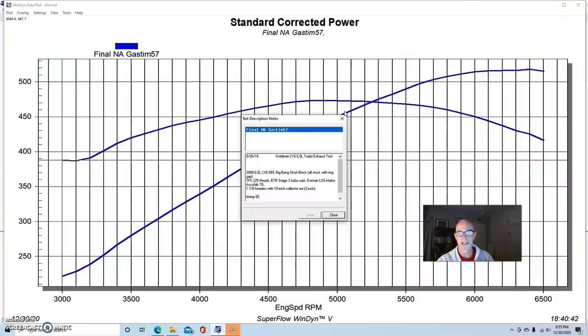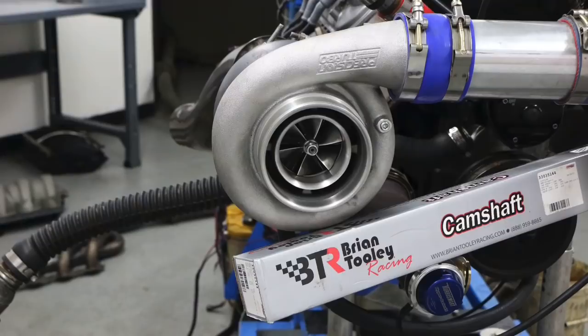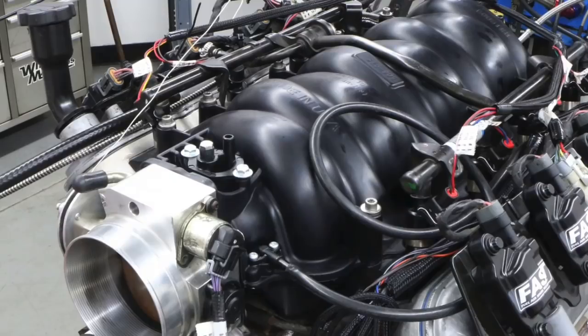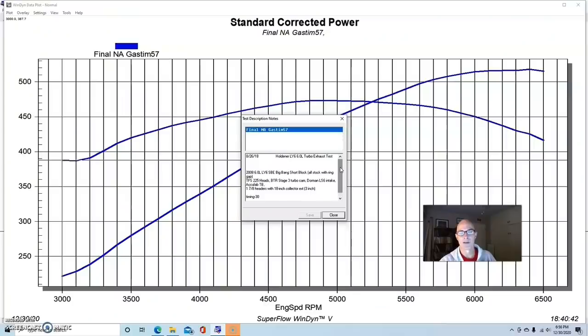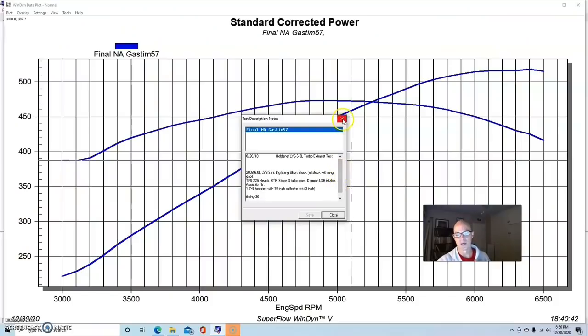We had modified it since running the big bang because this thing is put into service time and time and time again. In this configuration it was a stock bottom end 6.0 liter LY6 with extra ring gap, Trick Flow 225 heads, Brian Tooley Racing Stage 3 turbo cam, a Dorman LS6 intake manifold with an Accufab throttle body, and 1 7/8 inch headers.